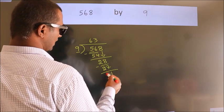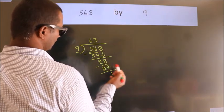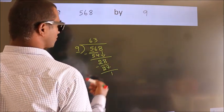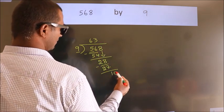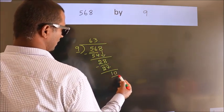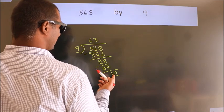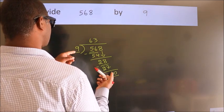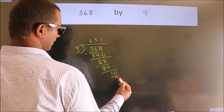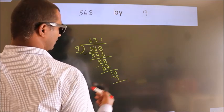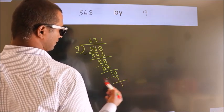After this, there are no more numbers to bring down. So what we do is put a dot and take 0, giving us 10. A number close to 10 in the 9 times table is 9 ones, 9. Now we subtract and we get 1.